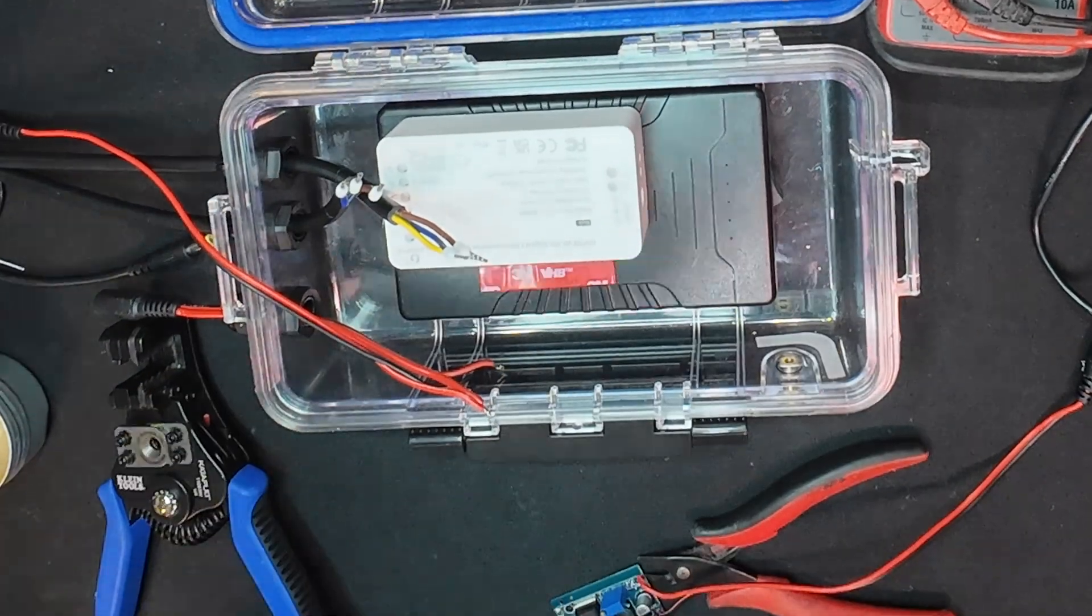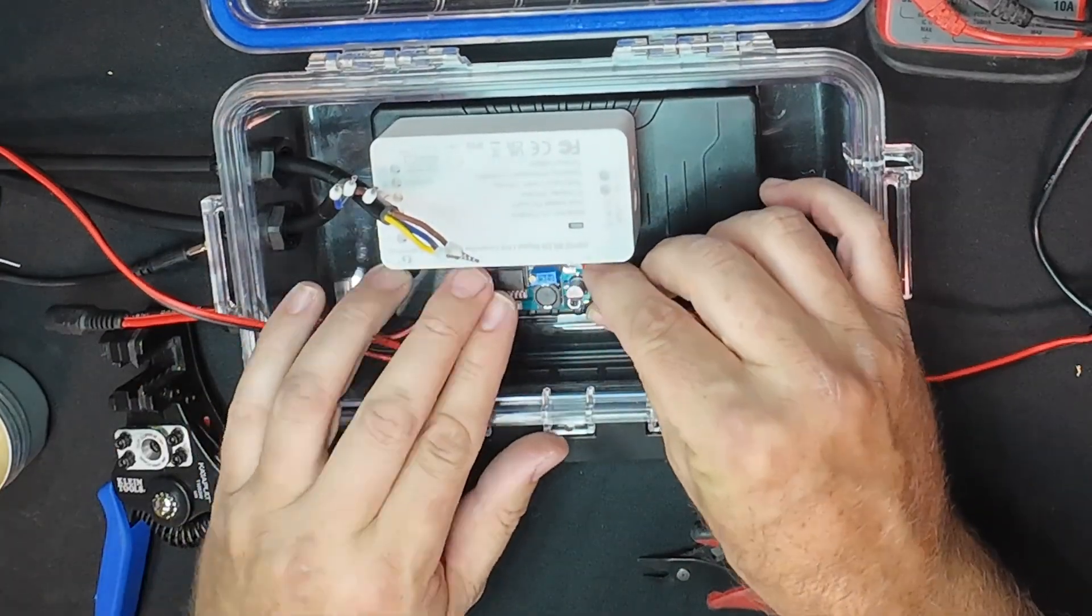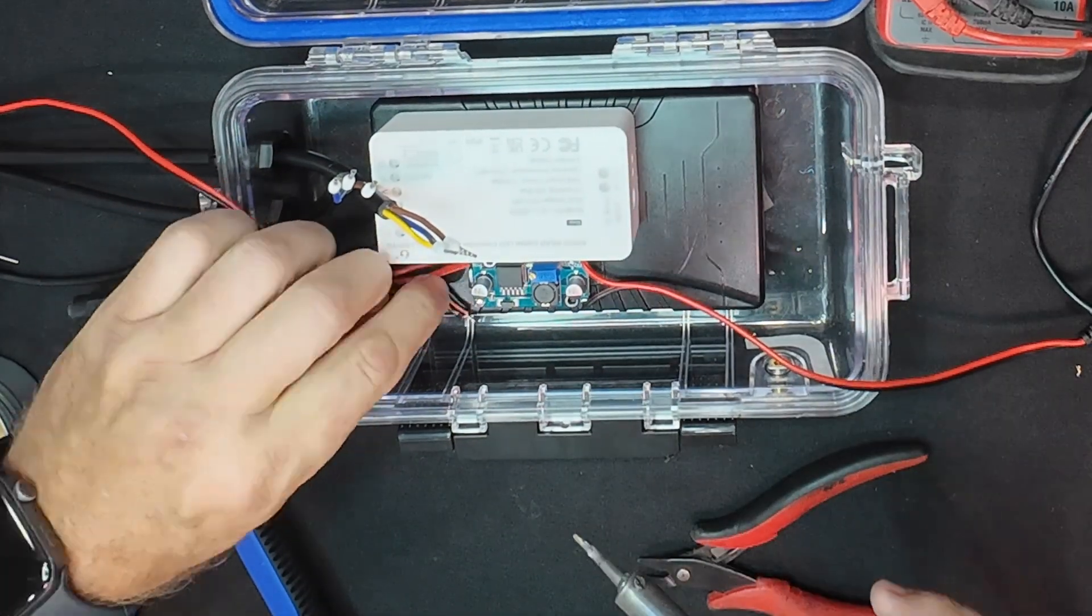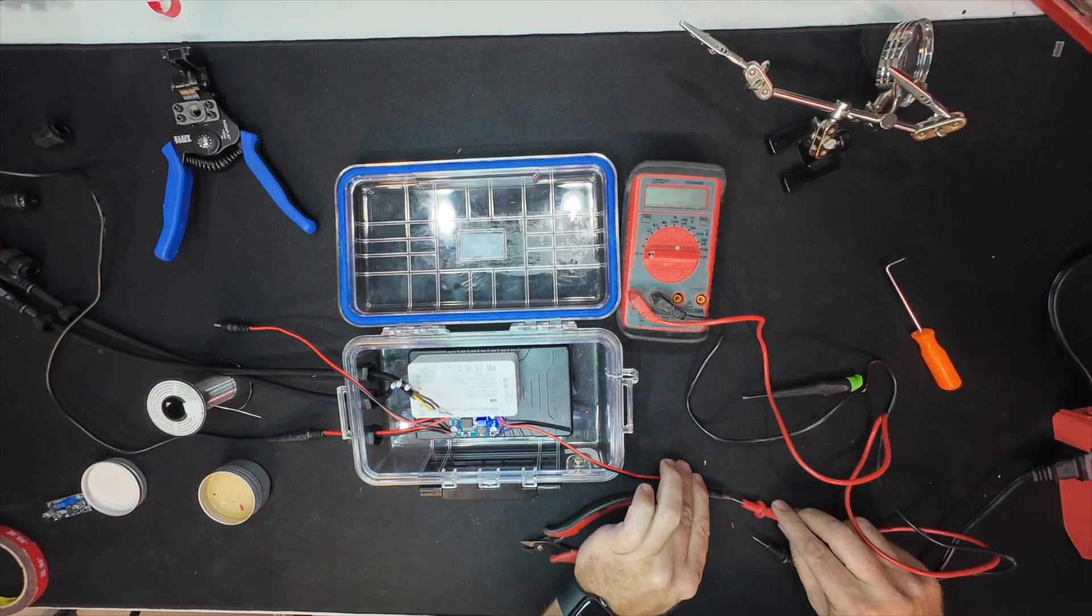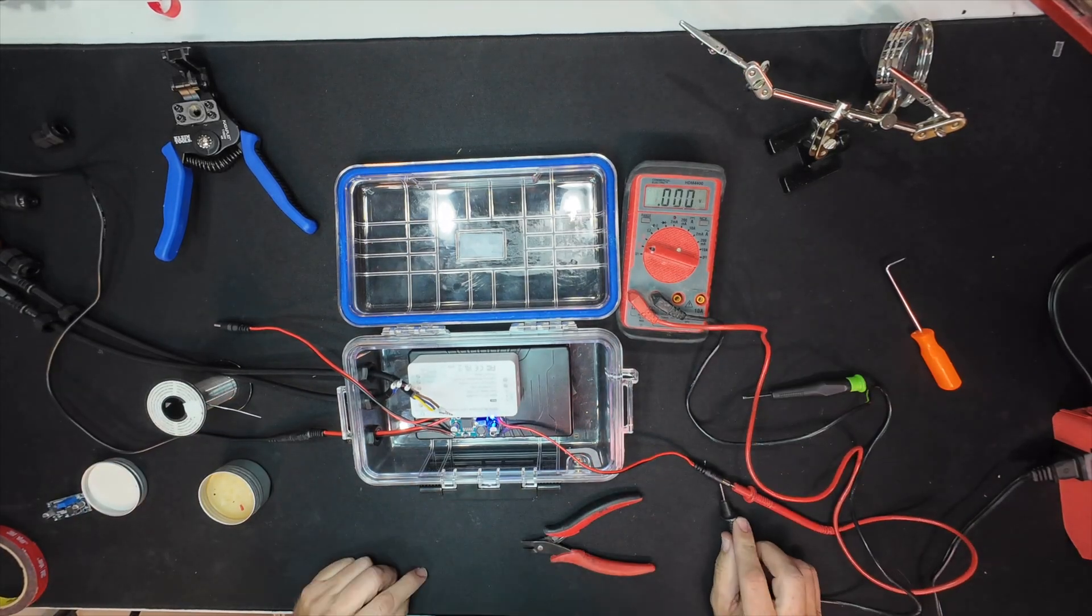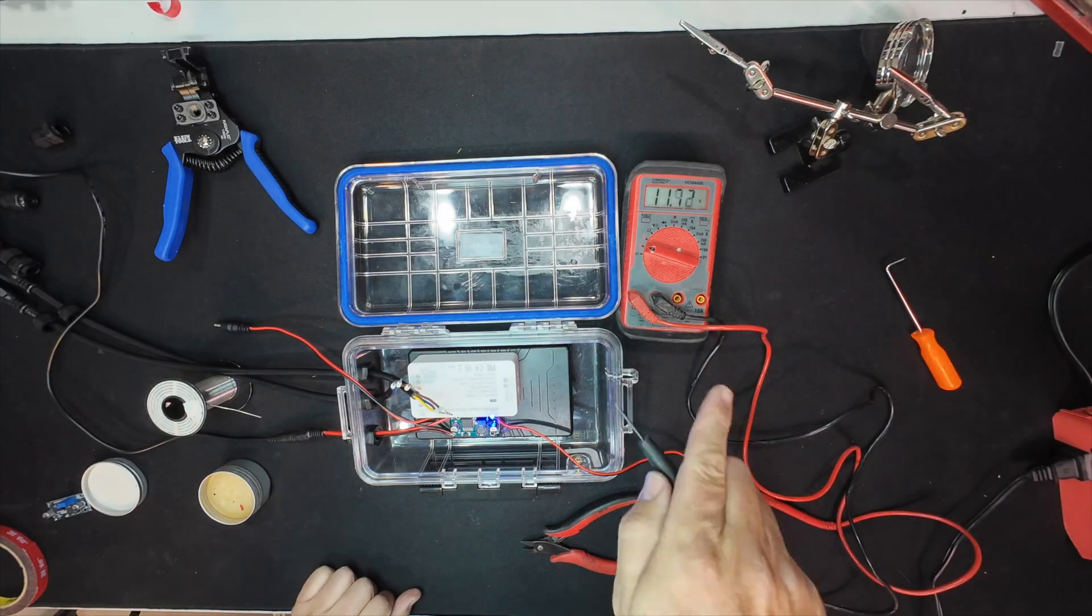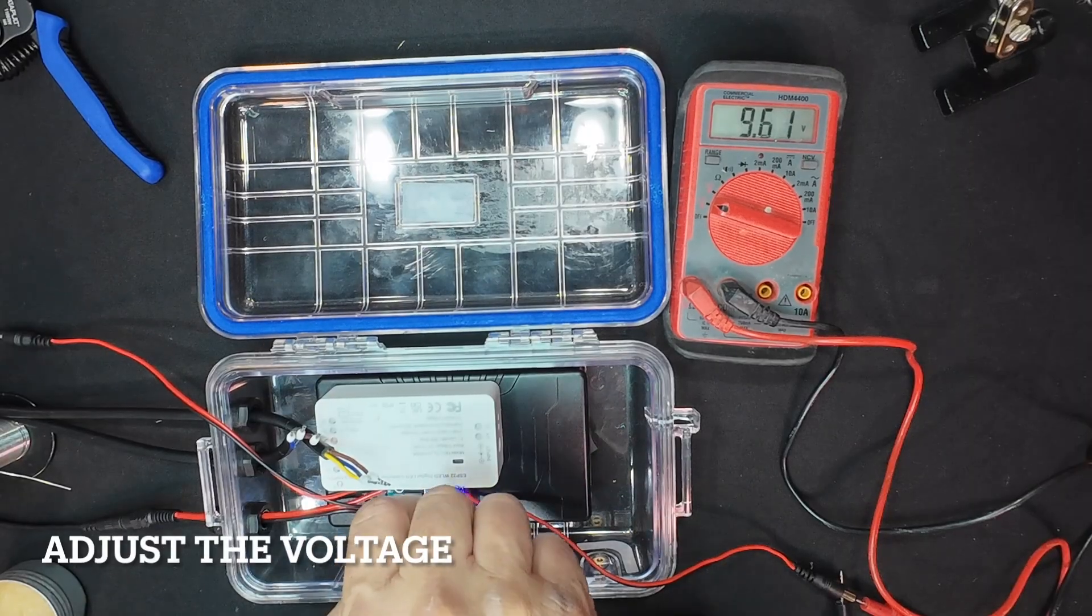I put the female end on the buck converter because that's what we're going to need to plug into the GLEDOPTO. Put some double-sided tape on here, taped it to the top of the battery. I'm going to start terminating the other ends. You can see one is coming through the gland - that's hanging loose, that is my input side, so it's 12 volts coming in. I'm going to terminate that on top of the buck converter and I have the other cable ready to plug into the battery.